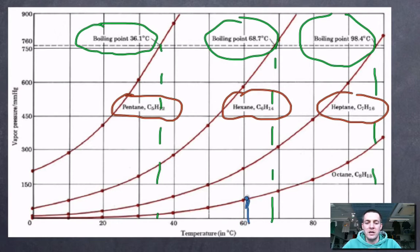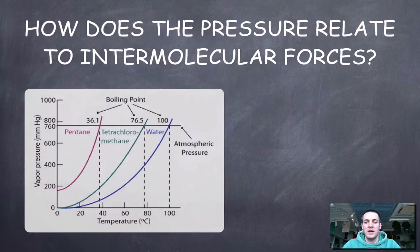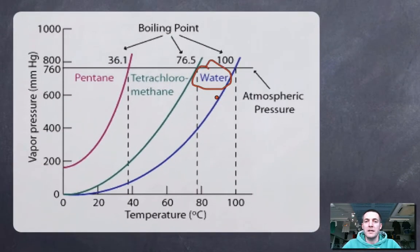If we choose any temperature — say 60°C — octane has the lowest vapor pressure because it has the strongest intermolecular forces. All these liquids are non-polar molecules, which is why we're only talking about van der Waals forces. But if we consider liquids with different kinds of intermolecular forces, we can extend this discussion further.